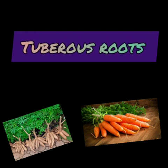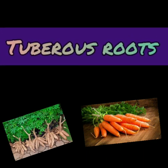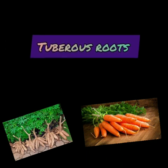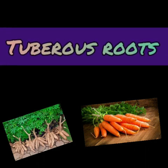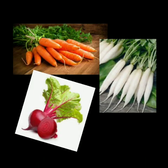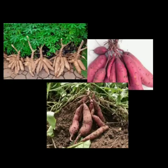Tuberous roots. The roots that are swollen due to storage of food are known as tuberous roots. Carrot, radish, and beet are some of the examples for storage of food in tap root. Maniac and sweet potato are some of the examples for storage of food in adventurous roots.